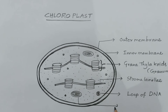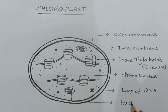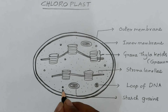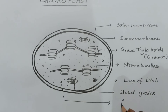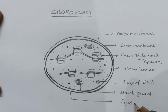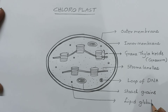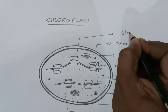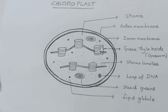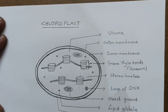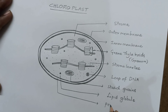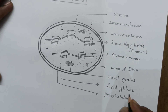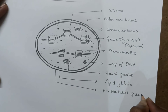This is a starch granule. These are lipid globules. This is stroma. The space between the inner membrane and outer membrane is called the periplastidial space. This completes the chloroplast diagram.